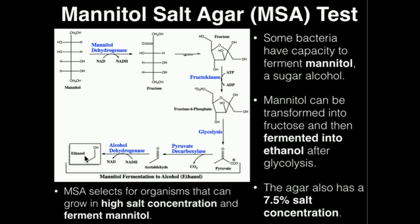So what does the MSA test do? Mannitol salt agar selects for organisms that can grow in high salt concentration and ferment mannitol. Examples of bacteria that will be selected for would be members of Staphylococcus.